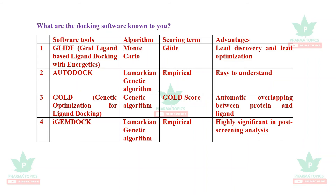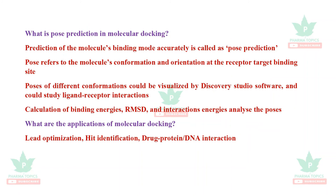Different docking software: Schrödinger Glide — grid ligand-based docking with energetics, uses Monte Carlo method, scoring term is Glide, advantages include lead discovery and lead optimization. AutoDock — uses Lamarckian genetic algorithm, scoring is empirical, very user-friendly. GOLD — Genetic Optimization for Ligand Docking, uses genetic algorithm, scoring is GoldScore, allows automatic overlapping between protein and ligand. iSemDock — uses Lamarckian genetic algorithm similar to AutoDock, highly significant in post-screening analysis.